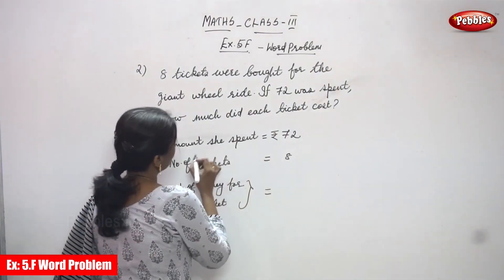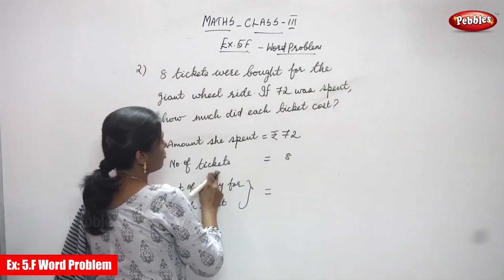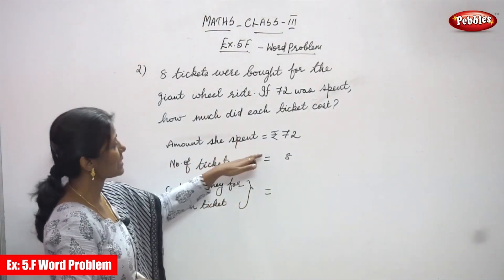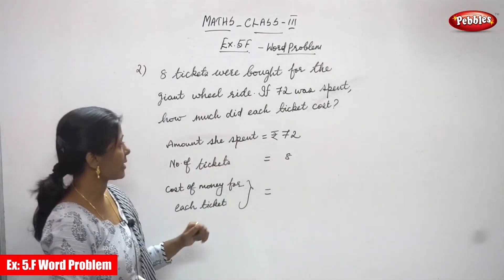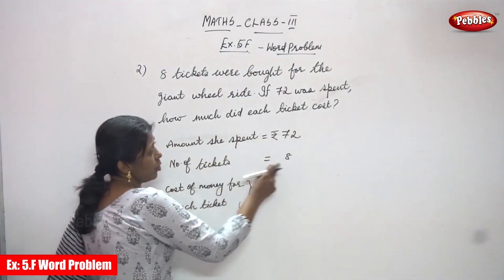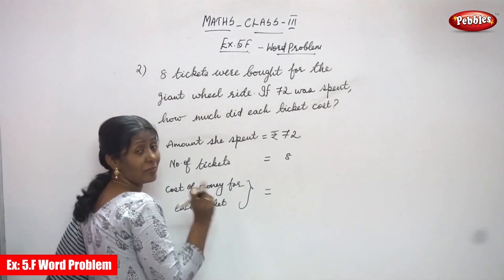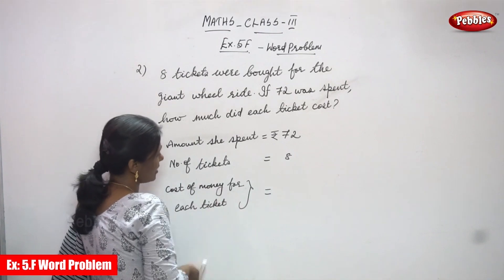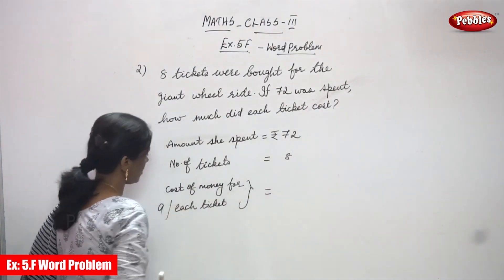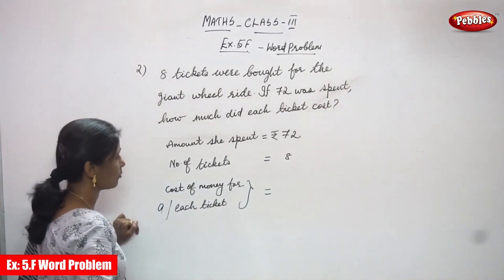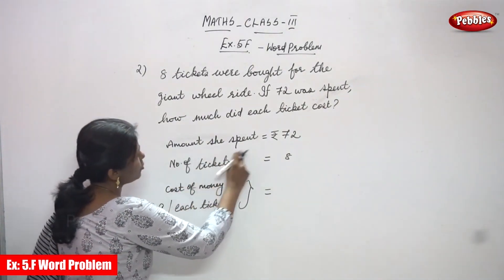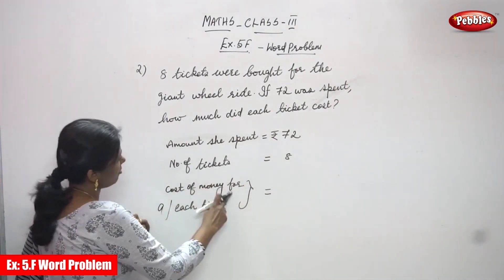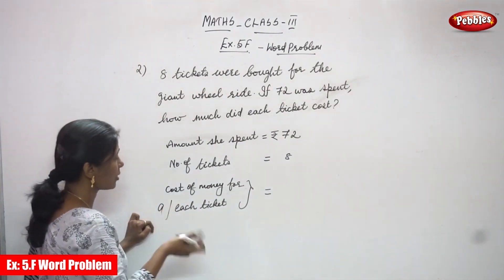Amount she spent for 8 tickets is rupees 72. Number of tickets is equal to 8. Cost of money for each ticket — we have to find out. So amount she spent for 8 tickets for the giant wheel ride is rupees 72, number of tickets is 8, and cost of money for each ticket we have to find out.